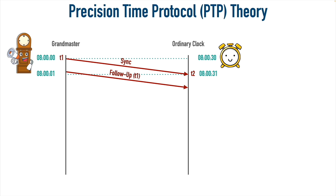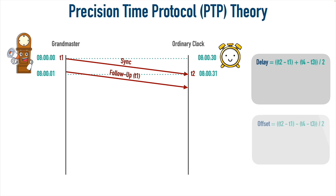The challenge is that the ordinary clock cannot simply adjust its time by 31 seconds, because part of that 31 seconds is network delay — the time it took for those PTP packets to travel to the ordinary clock. This means the ordinary clock needs to calculate two different values: the delay value (the time it takes PTP packets to cross the network), and the offset (the amount by which it needs to adjust its clock). We'll walk through that math using four variables. We already know T1 (8 o'clock, 0 seconds) and T2 (8 o'clock, 31 seconds).